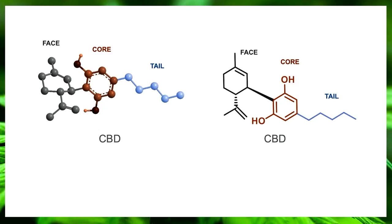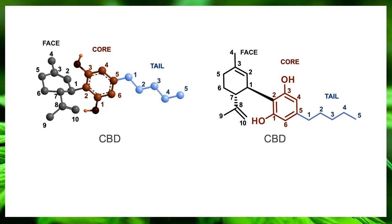Now let's divide this cannabinoid into three parts — let's call them face, core, and tail — and then just count carbon atoms on each one. The face will have 10 carbon atoms, the core has 6, and the tail has 5.